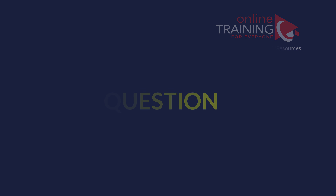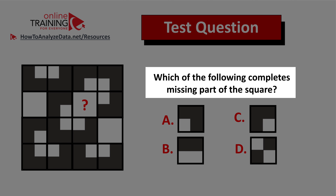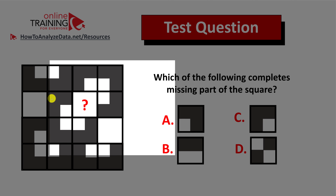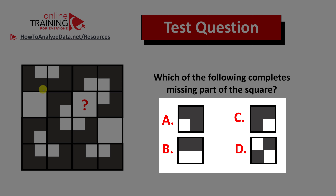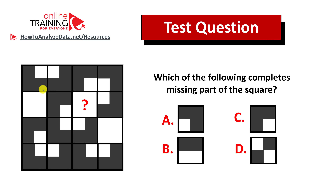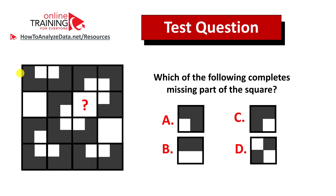Let me share with you a tricky question which tests your pattern recognition and visual reasoning skills. Which of the following completes the missing parts of the square? You're presented with a four-by-four square containing different smaller squares inside, and four possible choices: A, B, C, and D. Do you recognize the pattern? Now might be a good time to pause this video and give yourself 10 to 20 seconds to come up with the answer.